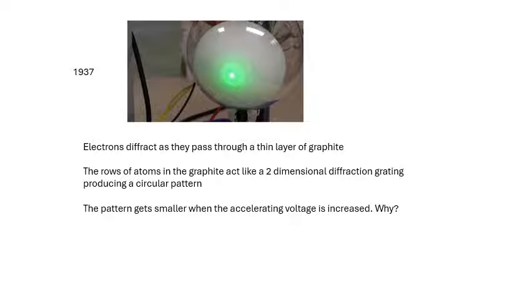Now, 1937, a few years later, experiments were done which actually showed electrons diffracting and producing a diffraction pattern. So this is electrons—fast-moving electrons from an electron gun—passed through a very thin layer of graphite, colloidal graphite. So you've got some very, very thin layers of graphite, and graphite is like carbon atoms. The electrons pass through and are diffracted, and then they fall onto a screen and we see a pattern. It's like a two-dimensional diffraction grating, so it produces a circular pattern.